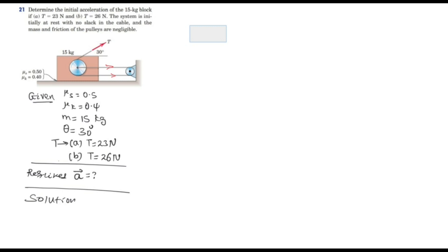We have two T forces acting horizontally and the x-component of the angled tension, which is T times cos 30 degrees. So the total tension force applied over the block is 2T plus T·cos 30°. This is the total tensional force acting on the block from the free body diagram.